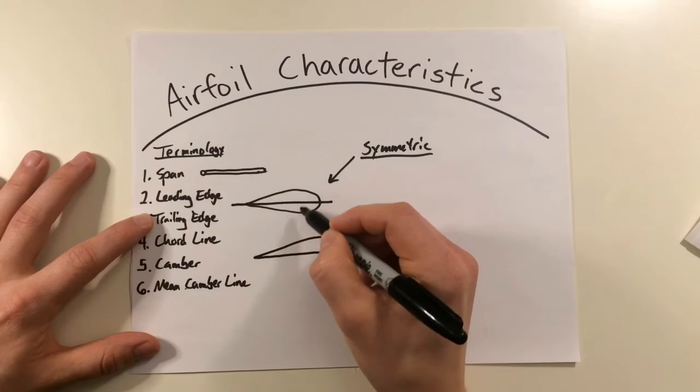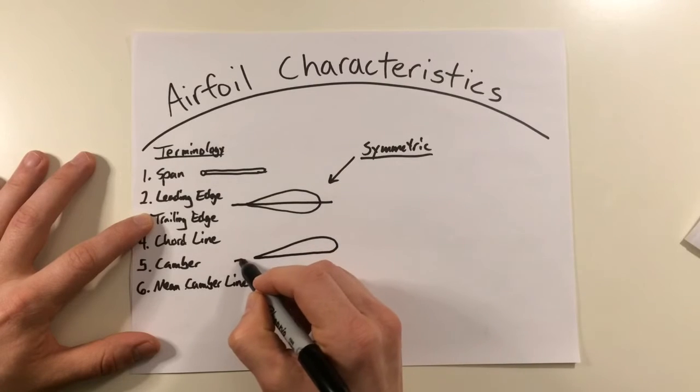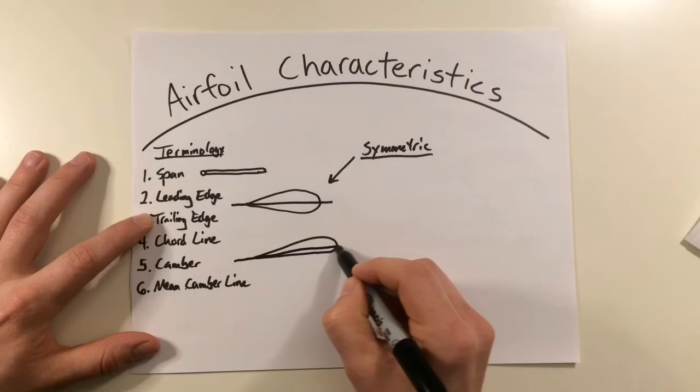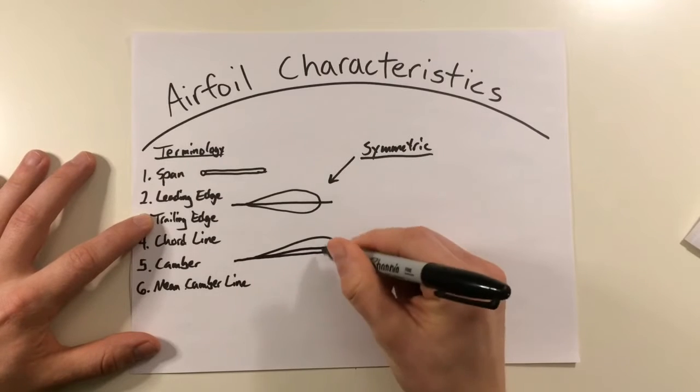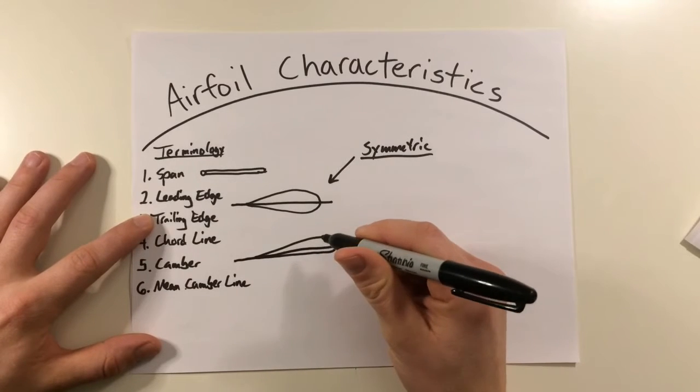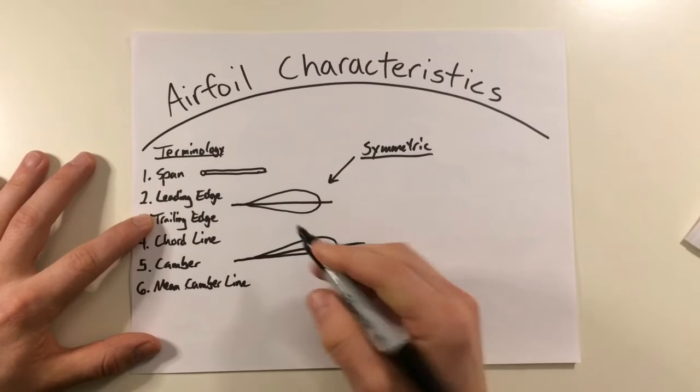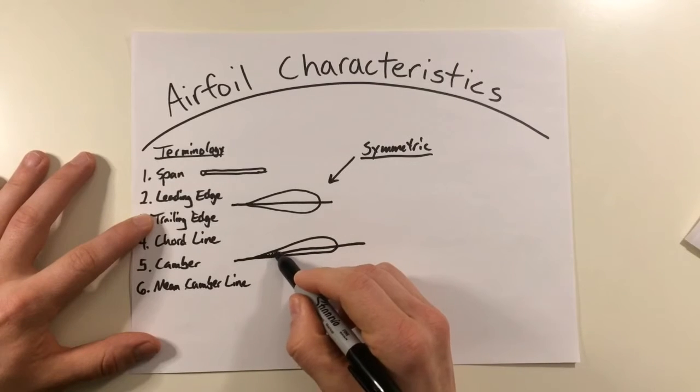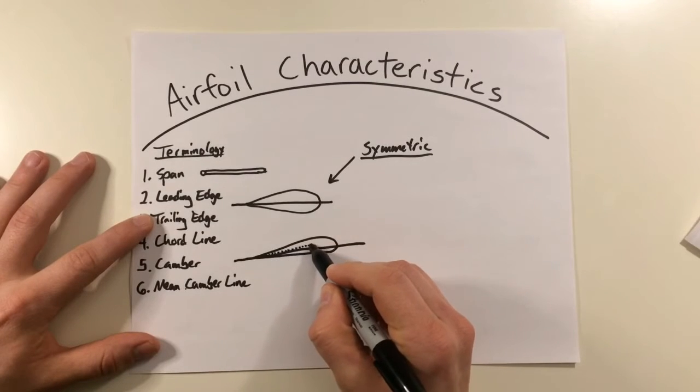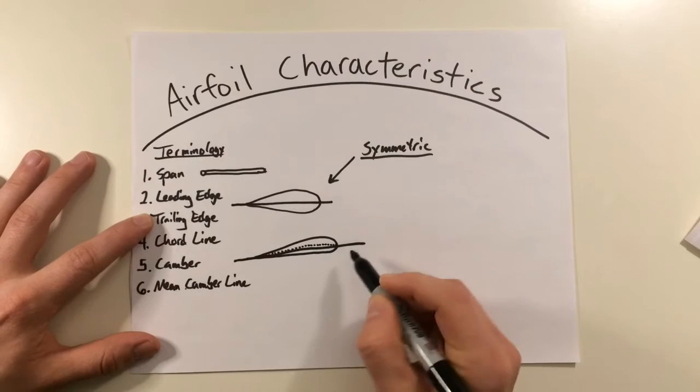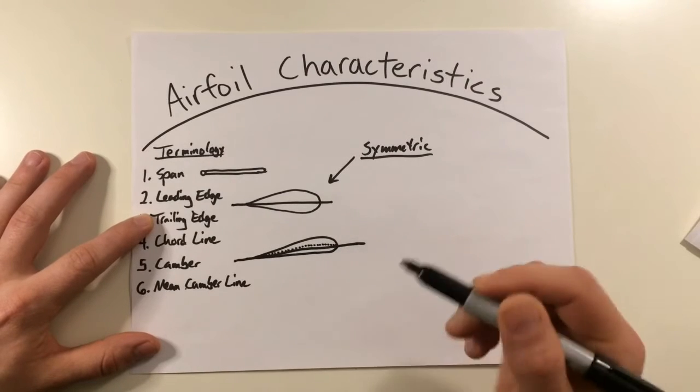So, whereas this had an equal upper and lower camber, now, if I were to draw the chord line through the leading and the trailing edge, you're going to see an increased upper camber compared to the lower camber. And our main camber line is actually going to deviate just slightly from the chord line as it follows the midpoint of the camber through the blade.